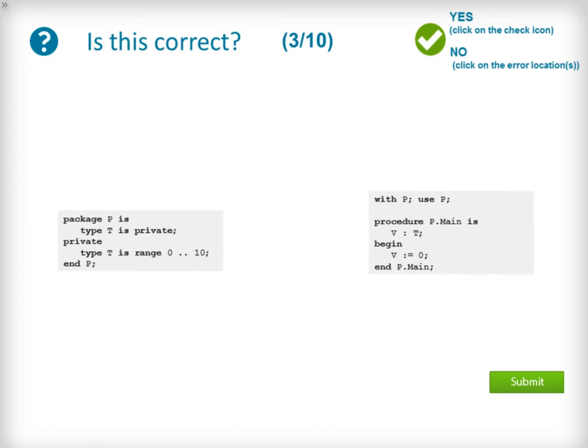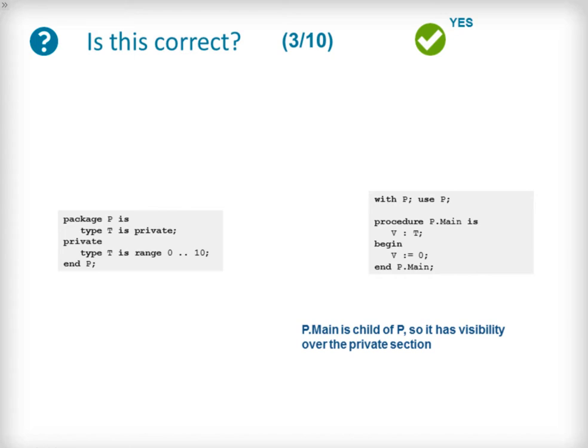Question 3 uses a slight variation on the code used in the previous question, now with the procedure main being declared as a child unit of the package P. This is correct code because the procedure main is a child unit of P and therefore has full visibility of the private section of package P. Remember that package bodies and children of the private type declaring package have full visibility of the private type implementation.